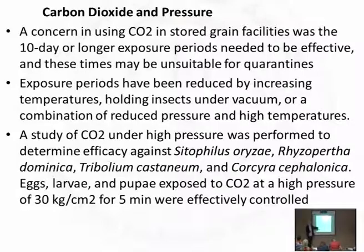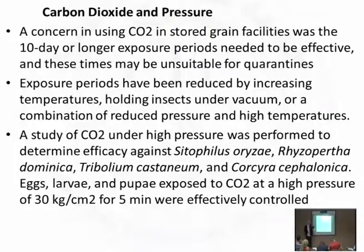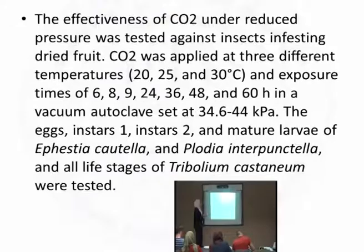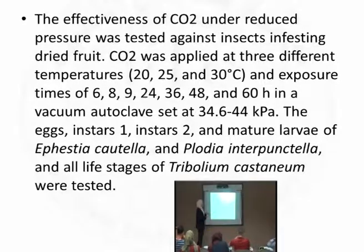Studies tested all life stages — eggs, larvae, and pupae — under combined treatment conditions. CO2 effectiveness under reduced pressure was also tested against insects infesting dried fruit. CO2 was applied at three different temperatures (20°C, 25°C, 30°C) with exposure times ranging from 6 to 60 hours, using a vacuum autoclave set at pressures of 34.6 to 44 pressure meters. The eggs, first instars, second instars, and mature larvae of Plodia interpunctella were all studied under these conditions.